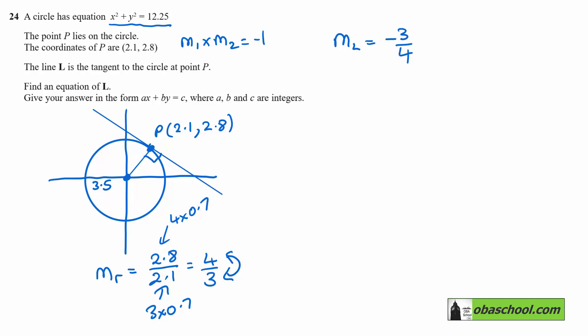We have the gradient as negative three quarters, and we know it goes through this point. We can use y equals mx plus c, or I like to use y minus y1 equals m times x minus x1.